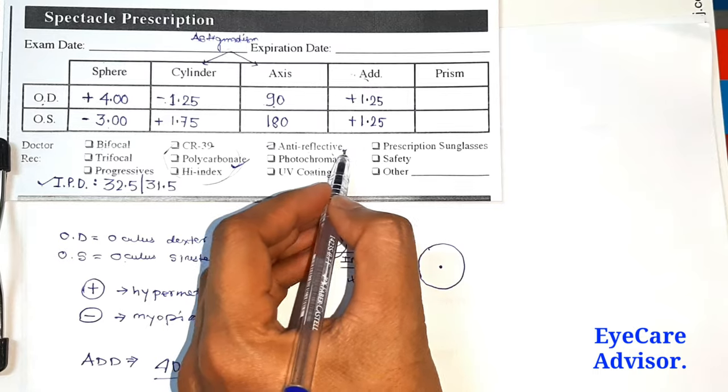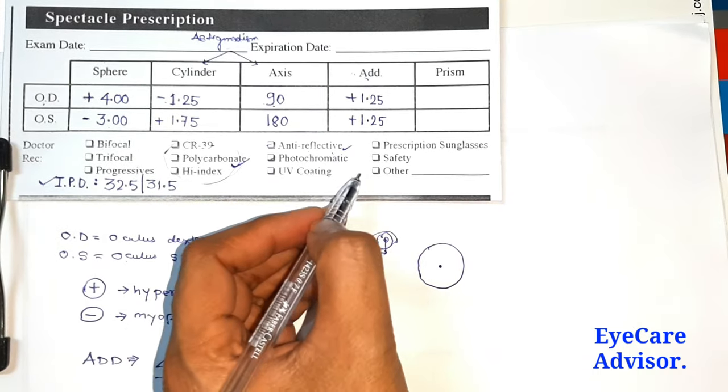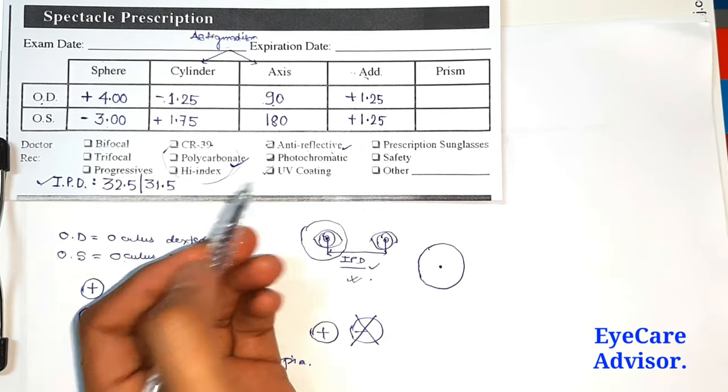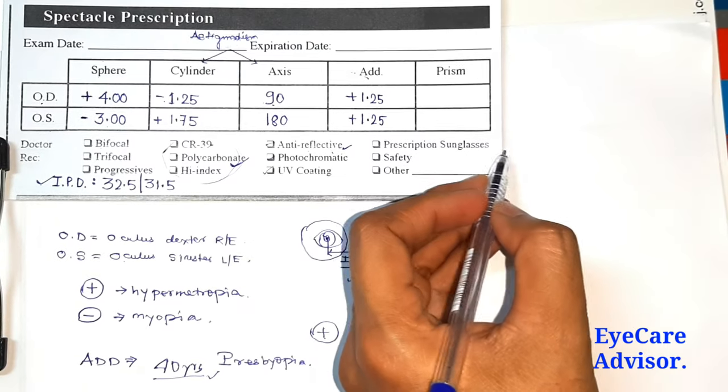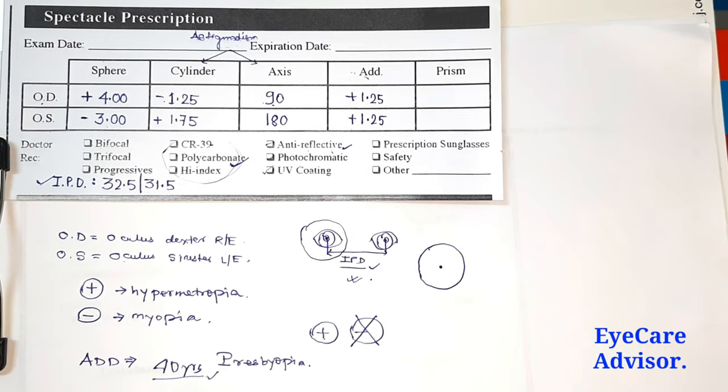Second option is photochromic, that means if you go outside in the sun it will become dark. UV protection coating is also there. There is another option of prescription sunglasses also. For persons who want to make prescription sunglasses, they can make them also. Those who are having higher power can opt for this one.